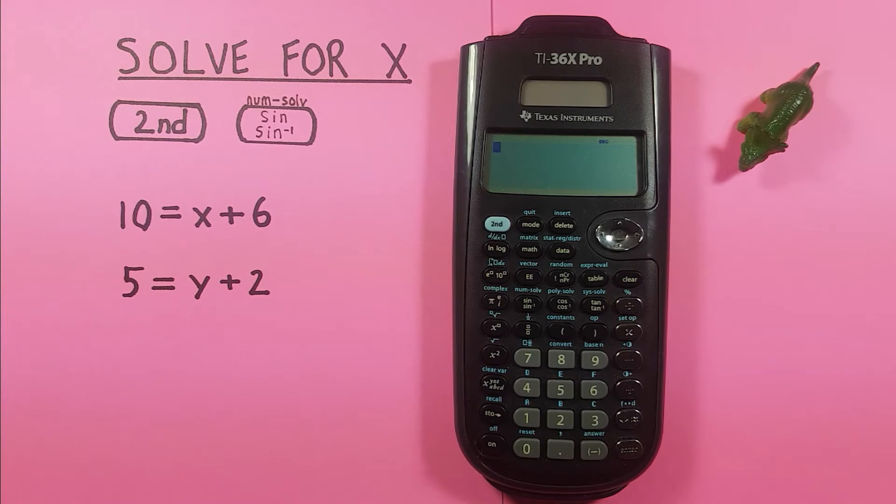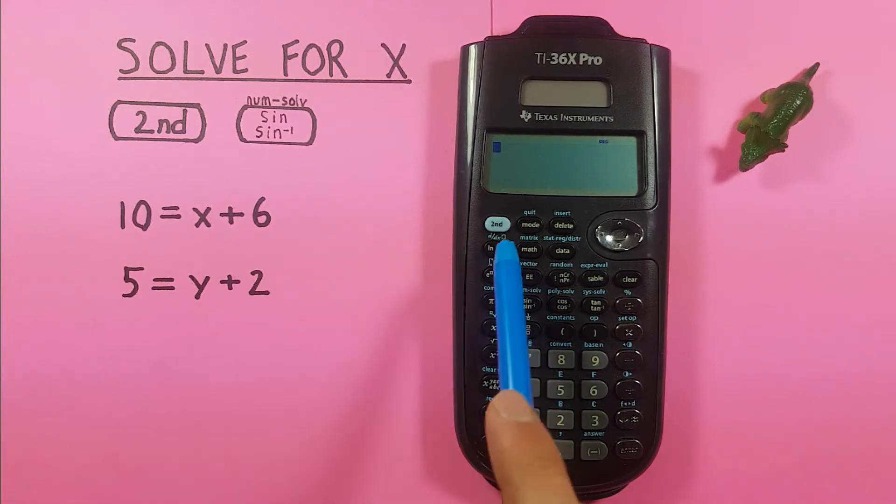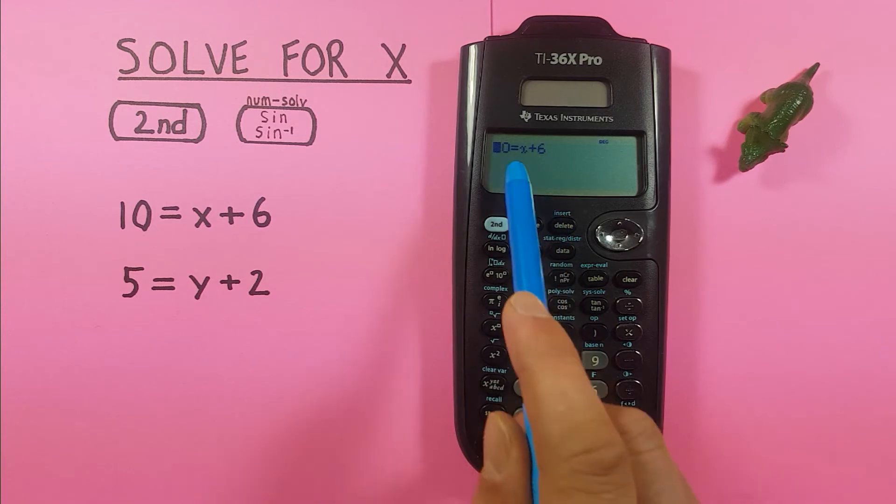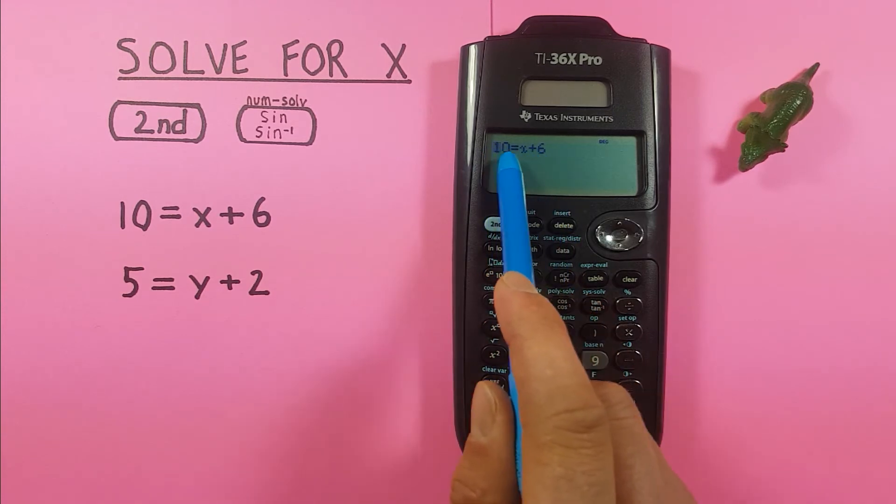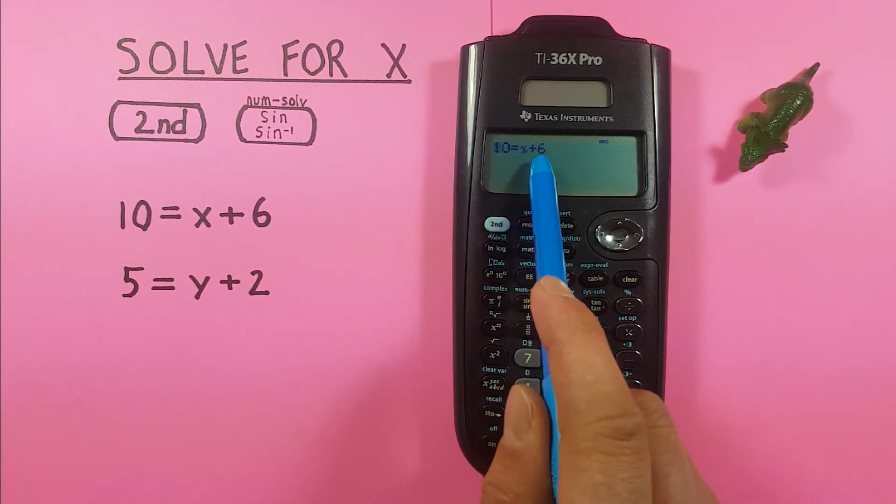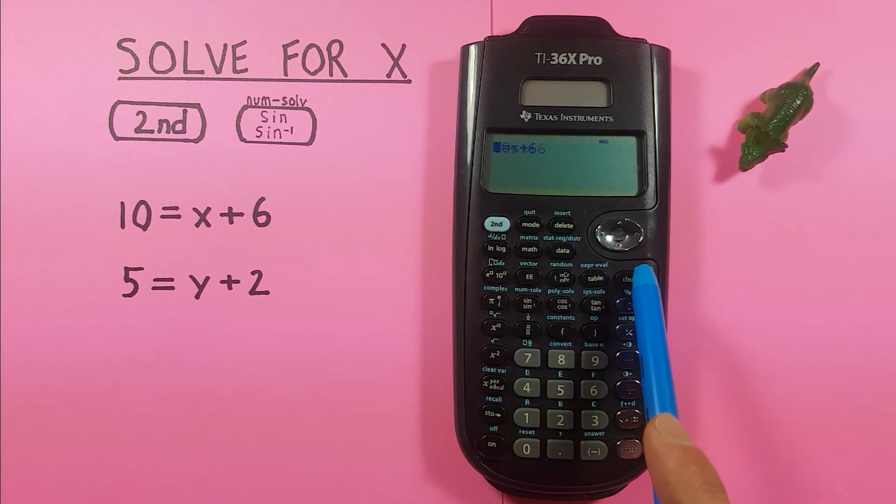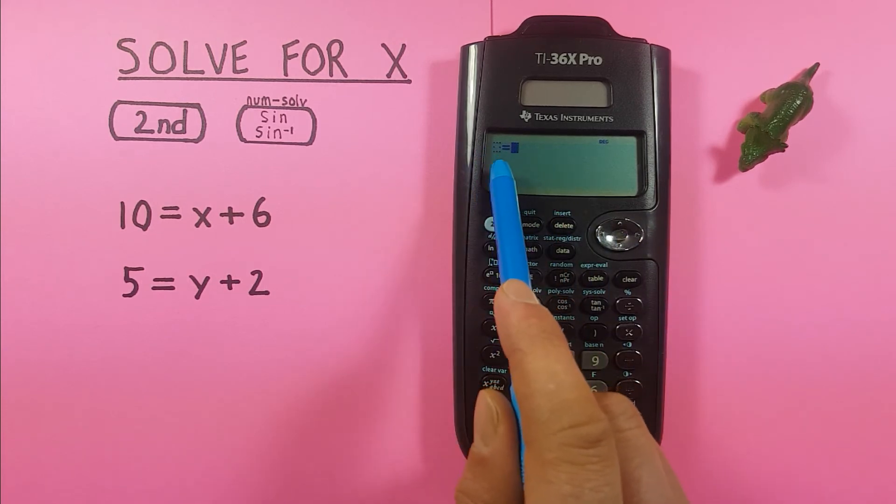Let's store another one. How about something for our y? Again we go second, sine. And here you can see we have that equation we used last time on here. So this time we can use the clear key to clear that out. Clearing both sides. Now we just have two empty boxes like we did before.